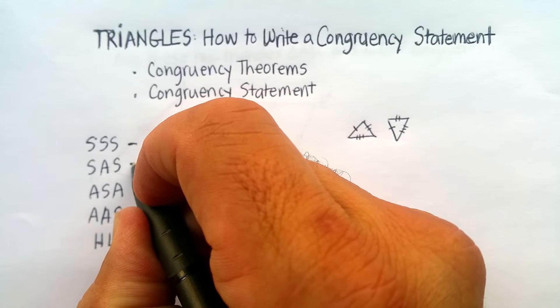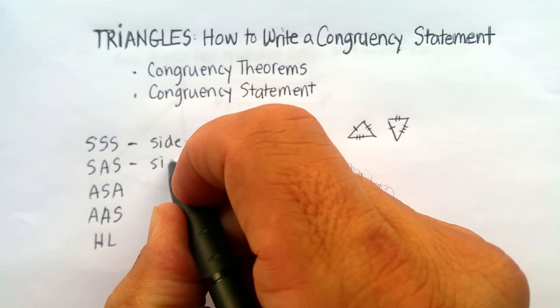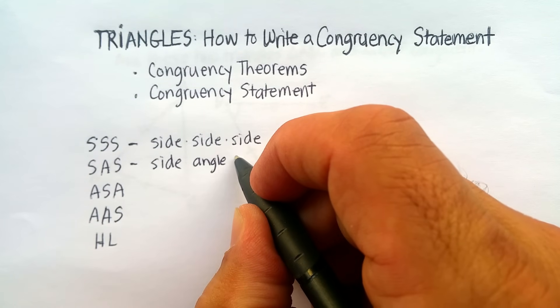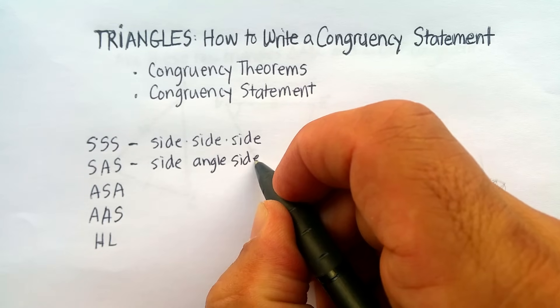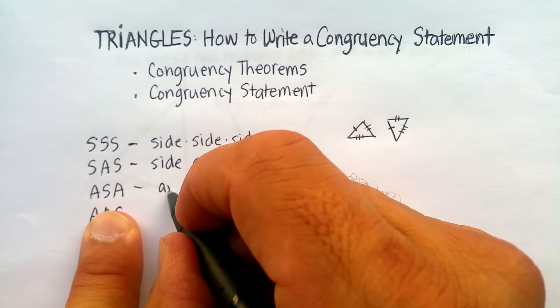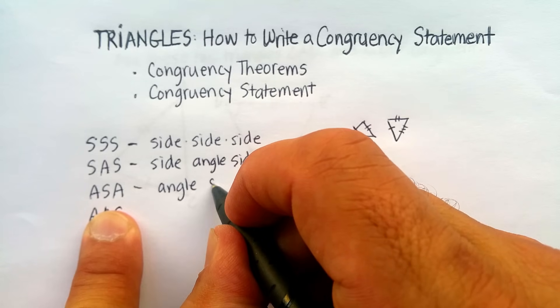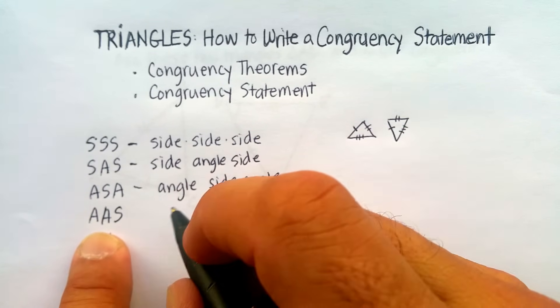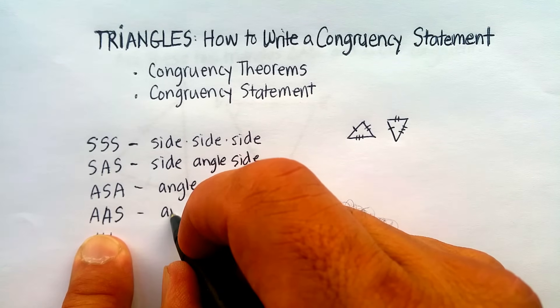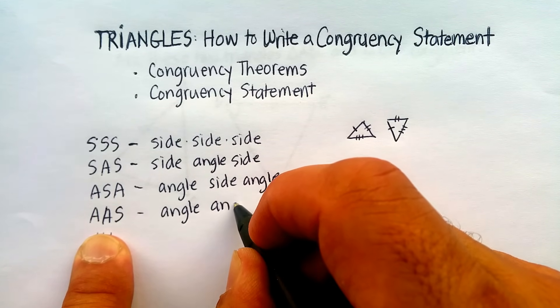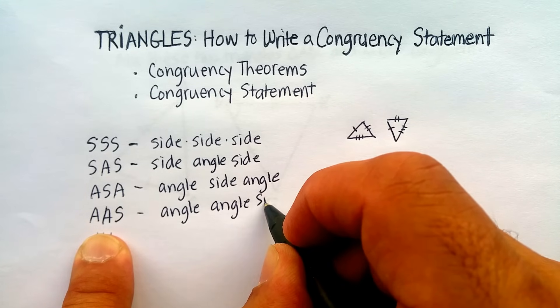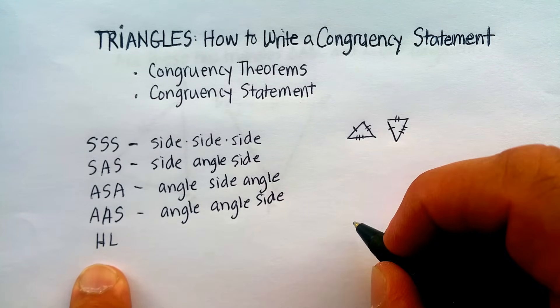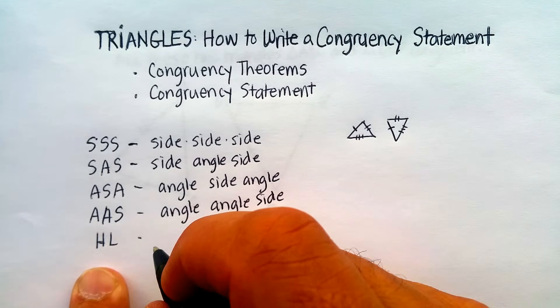The other four are the side-angle-side, SAS abbreviation, angle-side-angle, angle-angle-side. And then finally, for right triangles only, hypotenuse leg.